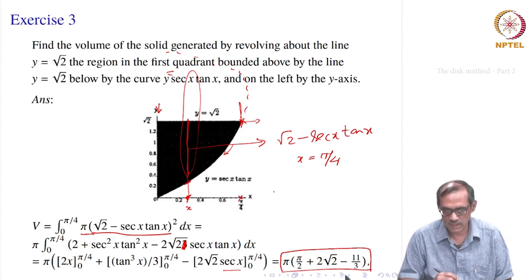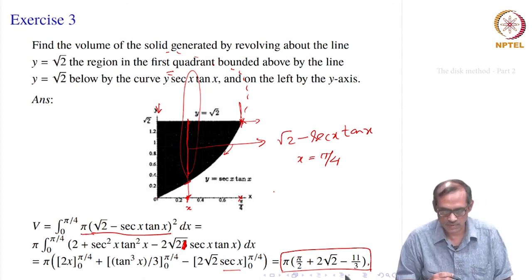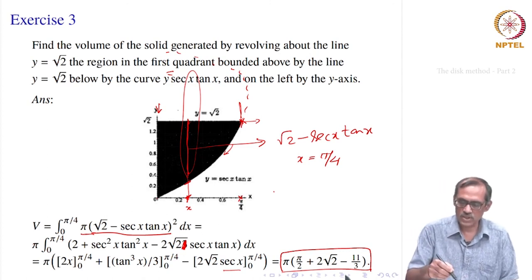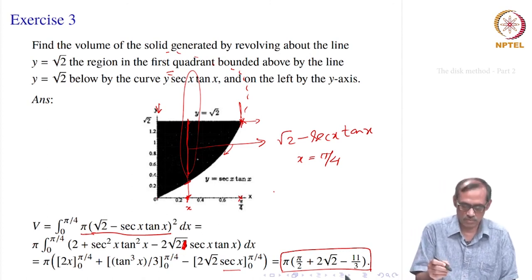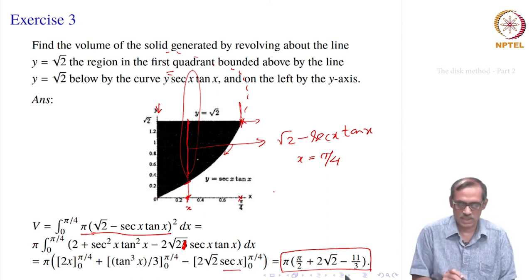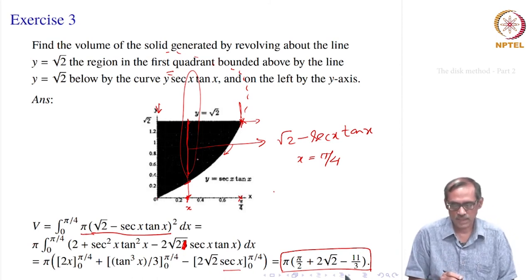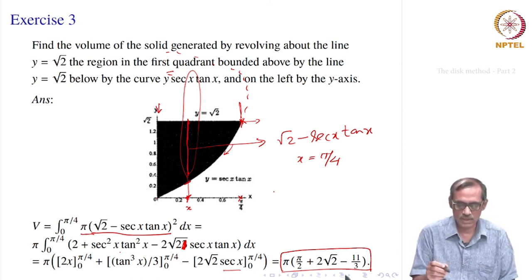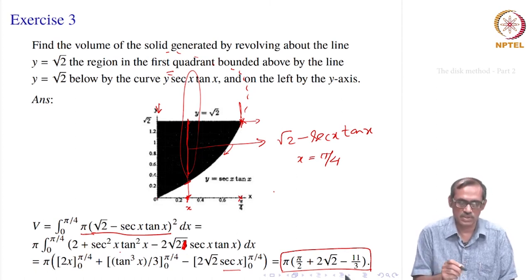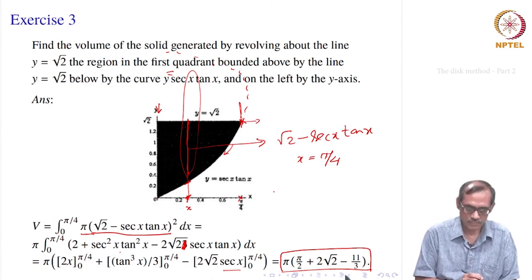Evaluating from 0 to π/4 and simplifying gives π times (π/2 + 2√2 − 11/3). So you see it is pretty straightforward — though it is called the disk method, you always think of the slice method. The cross-sectional area simply becomes a disk, hence the name.